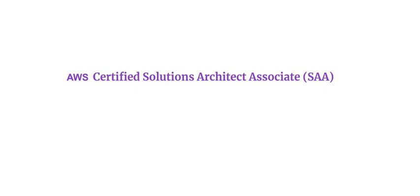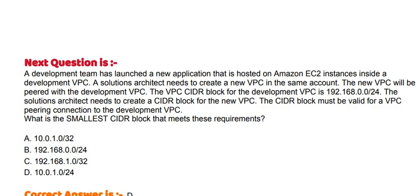Today's question: A development team has launched a new application that is hosted on Amazon EC2 instances inside a development VPC. A solutions architect needs to create a new VPC in the same account. The new VPC will be paired with the development VPC. The VPC CIDR block for the development VPC is 192.168.0.0/24. The solutions architect needs to create a CIDR block for the new VPC. The CIDR block must be valid for a VPC peering connection to the development VPC.